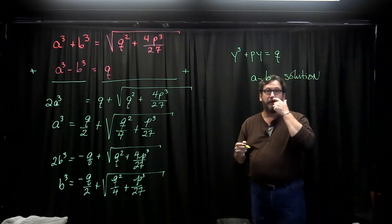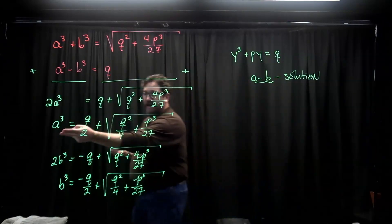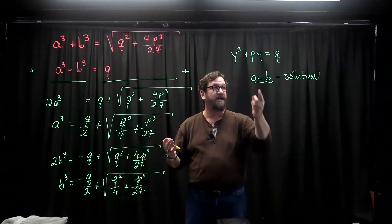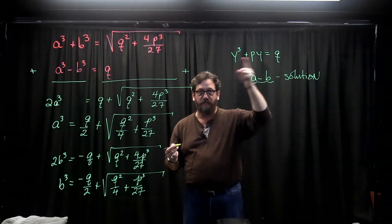And so all I'm going to do is have to figure out what is a minus b. If I can get to a cubed, I take the cube root of it. If I can get b, I take the cube root of it. Find the difference, and that is a solution to this problem.